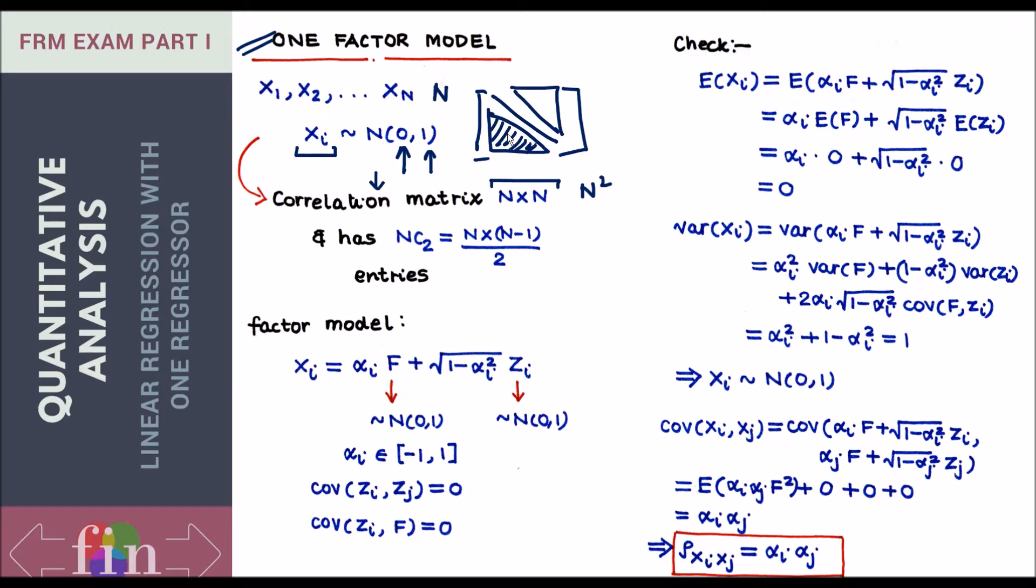How many values are these? If you count the number of pairwise correlations which I need to estimate or work with, that number comes to nc2. And nc2 basically comes to n into n minus 1 by 2. So I need these many entries, these many correlations first to estimate and then to work with.